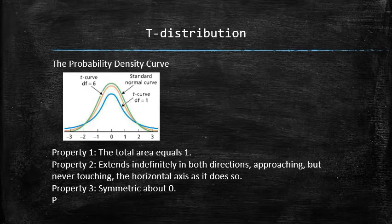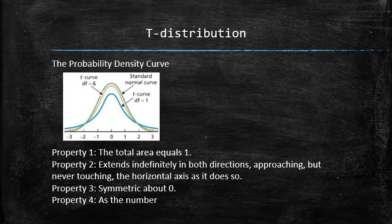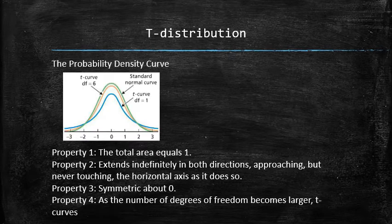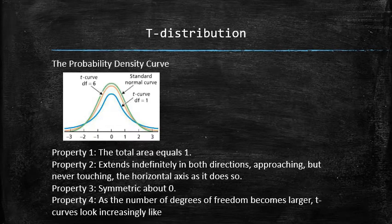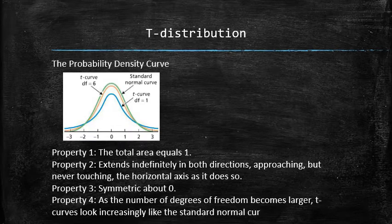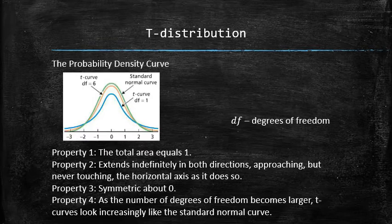Property number four, as the number of degrees of freedom becomes larger, t curves look increasingly like the standard normal curve. The degrees of freedom is a single number that determines entirely the shape of the curve and is called the parameter of the distribution.